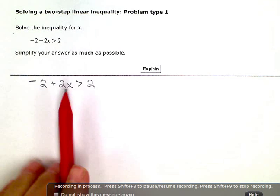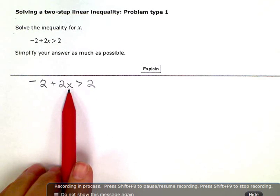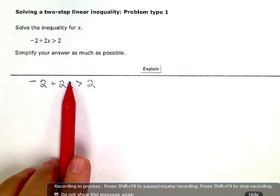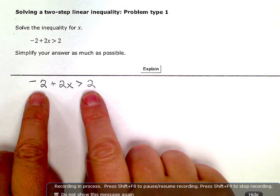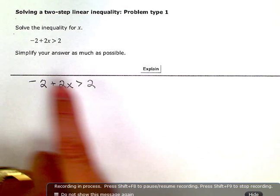I'm solving for x here. I only have one variable term, and it's on the left where I want it. But I have constant terms on both sides right now, so I want constant terms on the right.